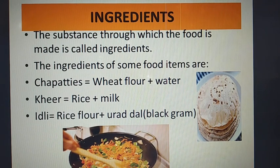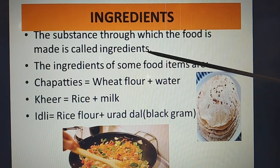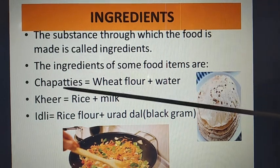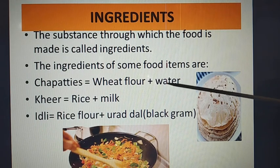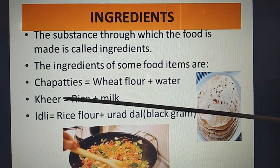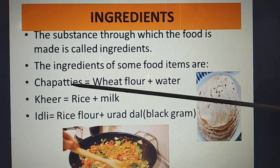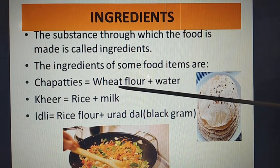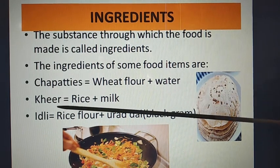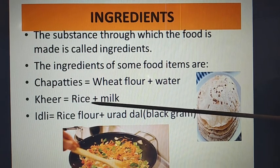Next is ingredients. The substance through which a food is made is called its ingredient. For example, chapati is made up of wheat flour plus water. A second example is kheer — kheer is made up of rice plus milk. So the ingredients of chapati are wheat flour and water, and the ingredients of kheer are rice and milk.